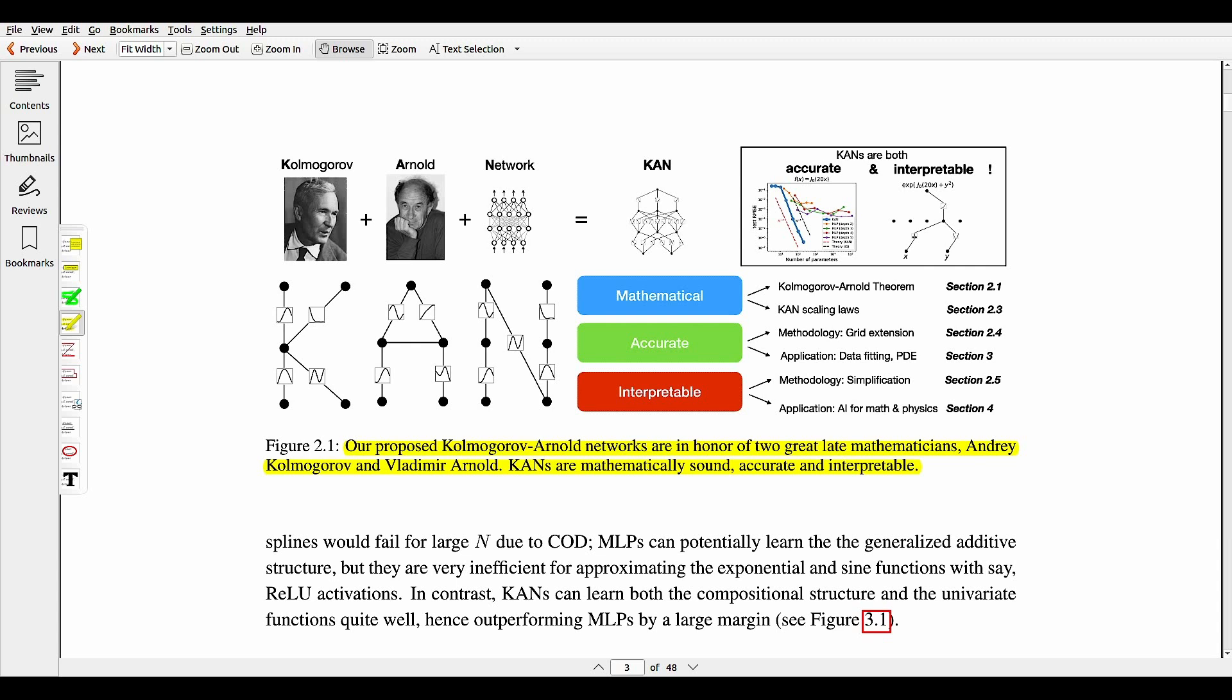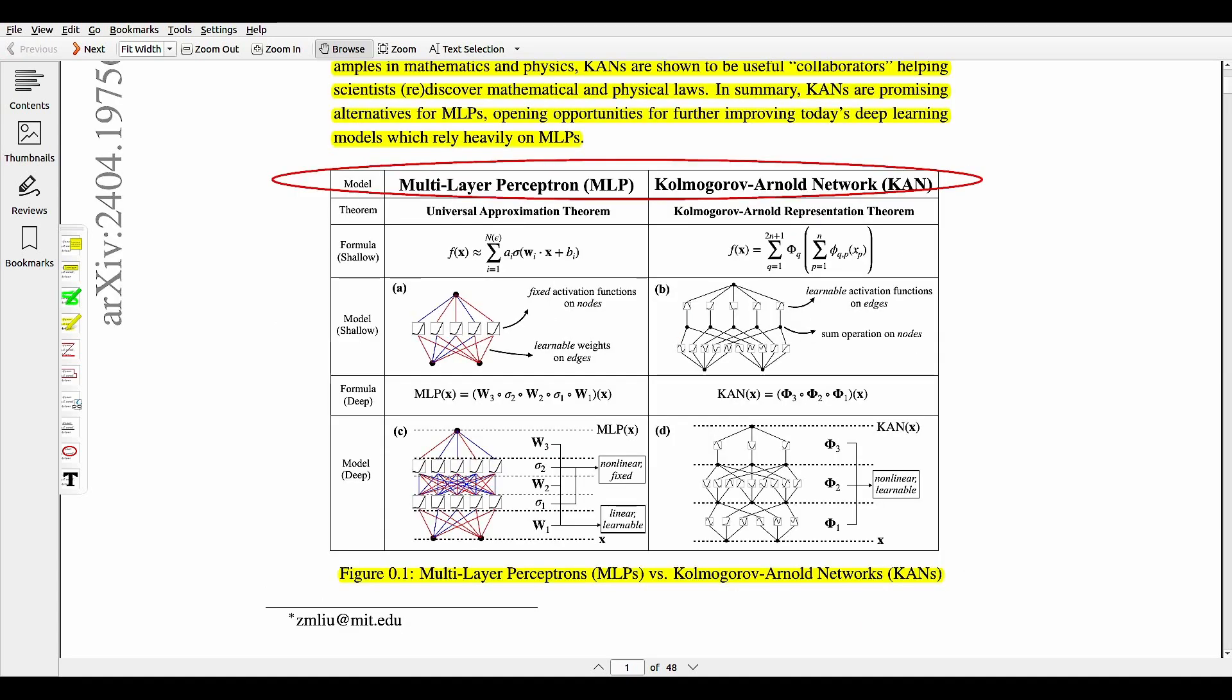Can a network achieve infinite accuracy with a fixed width? UAT, that is universal approximation theorem, says no, while this Kolmogorov-Arnold representation theorem says yes it can. And that's what the difference is. And from the algorithmic perspective, CANs and MLPs are dual in the sense that MLPs have usually fixed activation functions on neurons while CANs have learnable activation functions on weights.